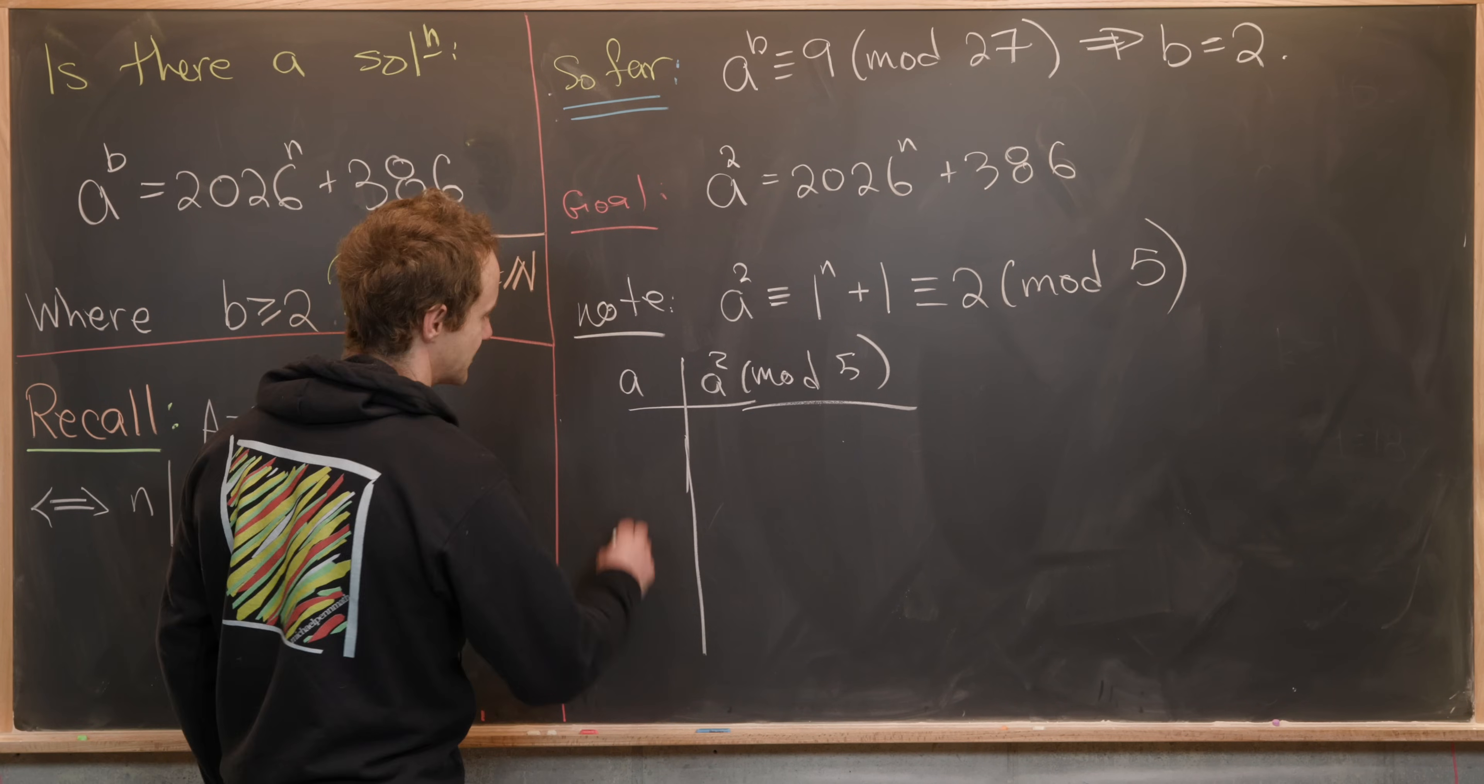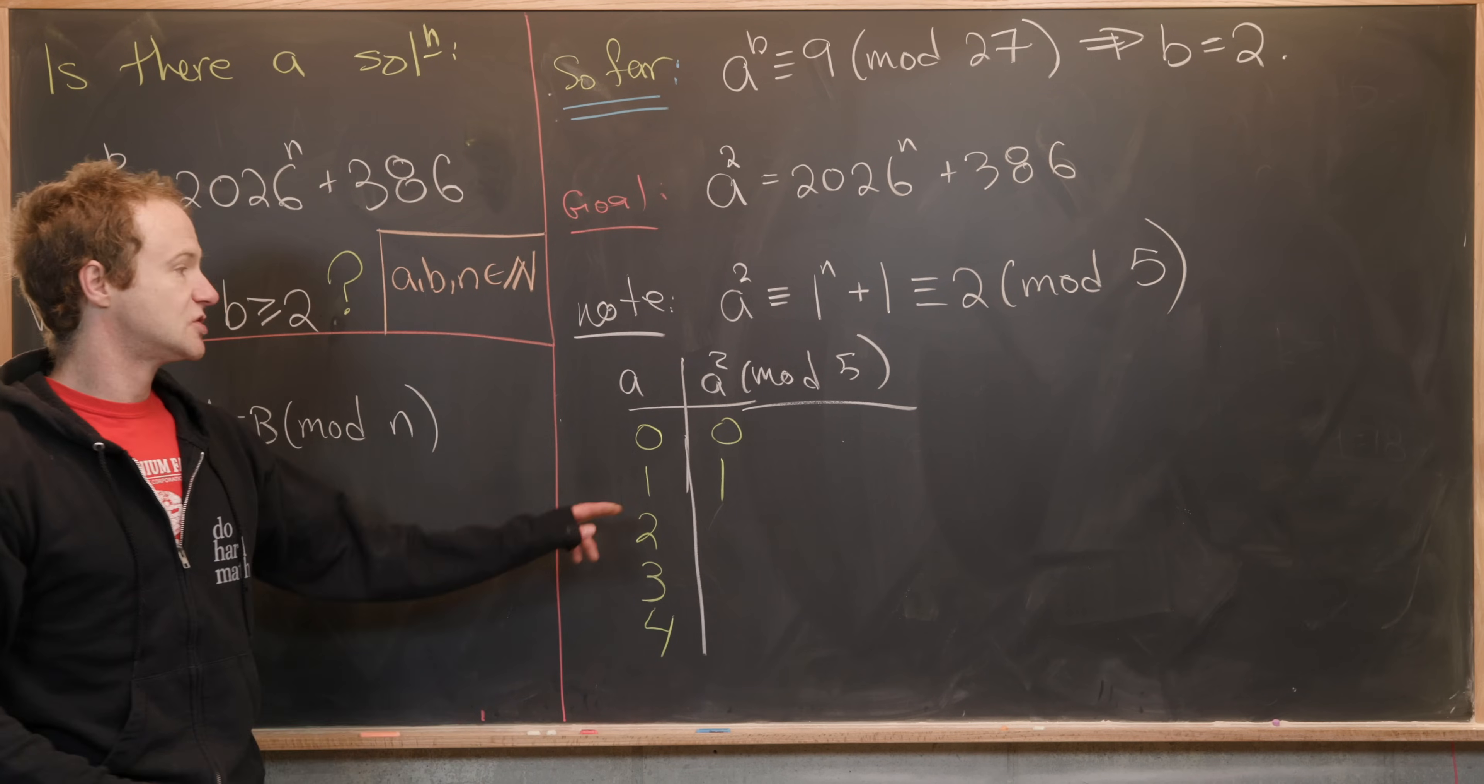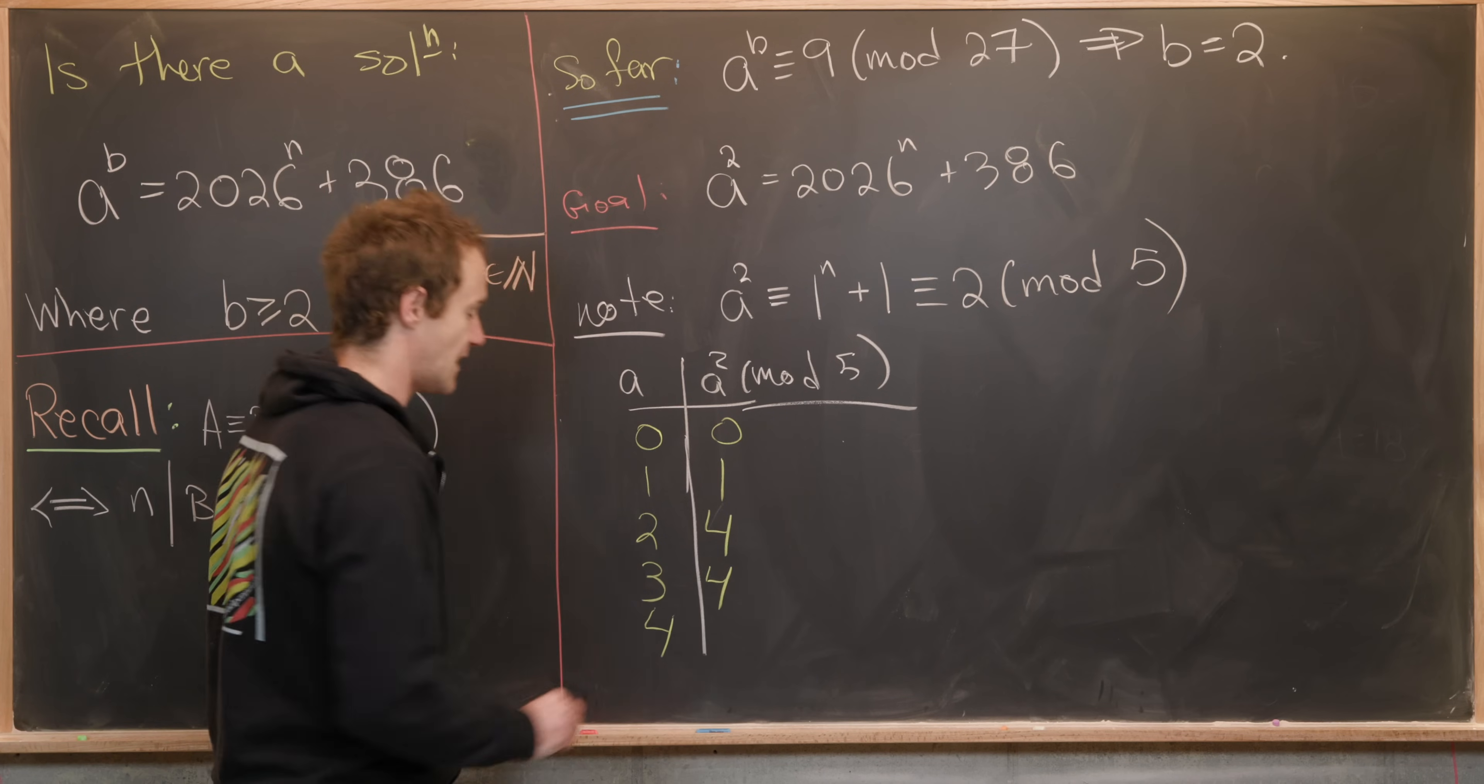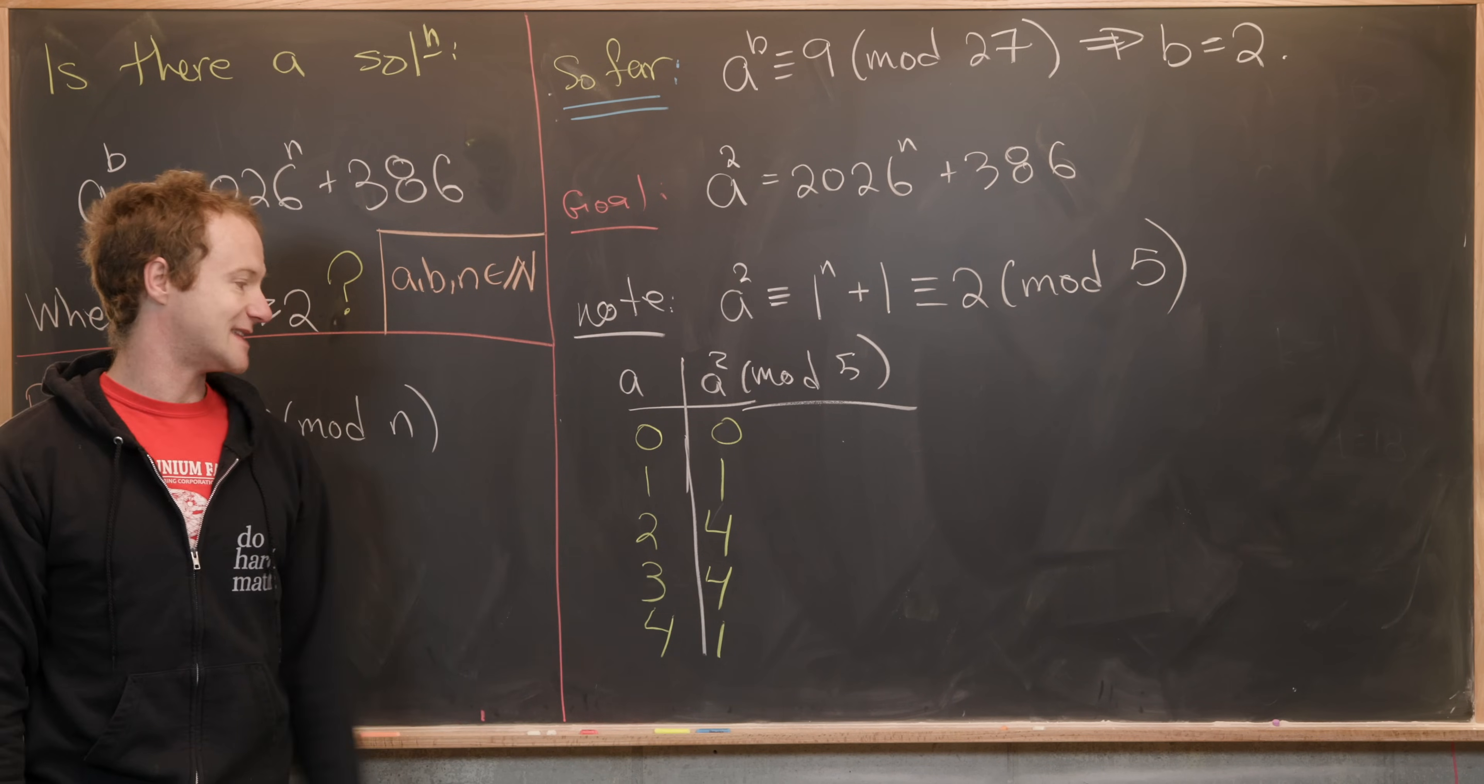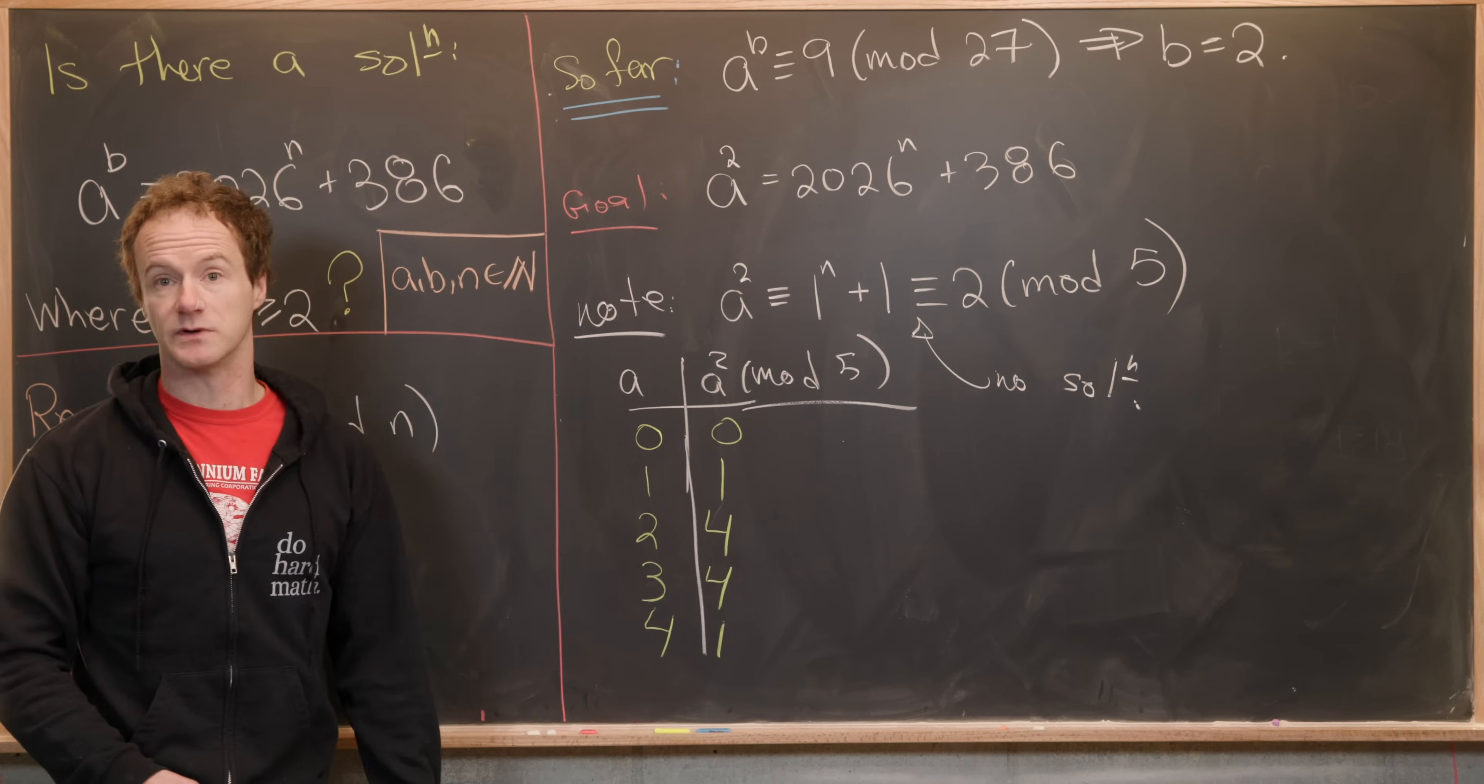So 0^2 is clearly 0 mod 5. 1^2 is 1 mod 5. 2^2 is 4 mod 5. 3^2 is 9 which is also 4 mod 5. 4^2 is 16 which is 1 mod 5. So what we want to notice is that none of these are equal to 2 which means there is no solution to this congruence.